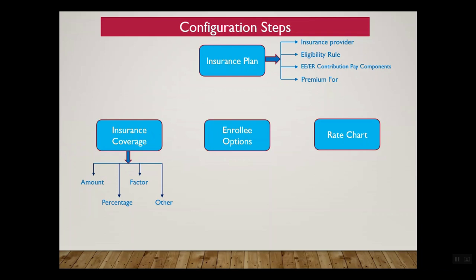For Enrollee Options, the fields to configure are: first, the enrollee or dependents — specify for which enrollee or dependent this option is being created. Second, minimum and maximum allowed dependents — how many dependents are allowed in this particular insurance plan. Third, dependent eligibility — specify a dependent eligibility rule based on which dependents will be considered valid enrollees for that particular insurance.